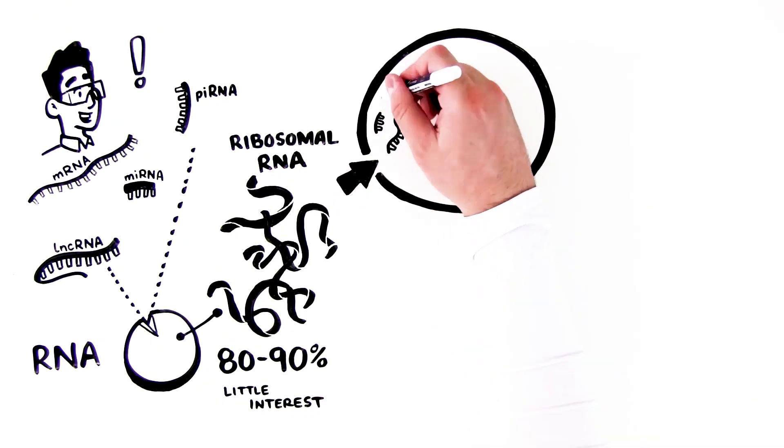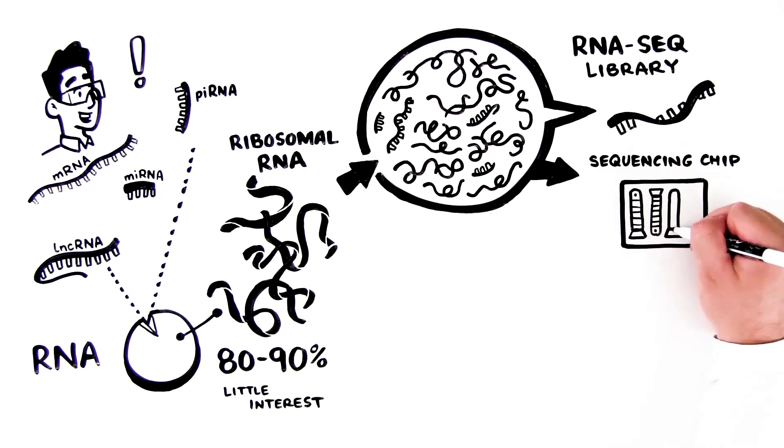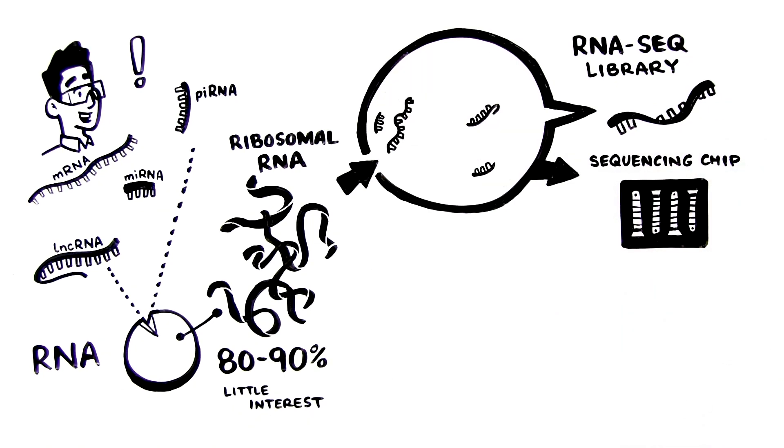To prevent ribosomal RNA fragments from dominating an RNA-seq library and taking up unnecessary space on a sequencing chip, they must be depleted prior to sequencing.